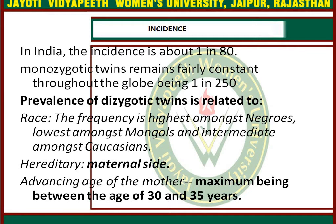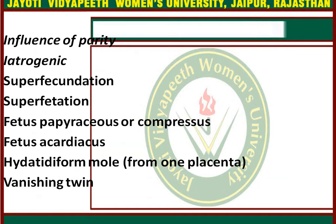Twin pregnancy is hereditary and usually on the maternal side. Advancing age of the mother is a factor, with maximum incidence between ages 30 and 35 years. The incidence is also increased with increasing parity, especially from para 5 onwards.